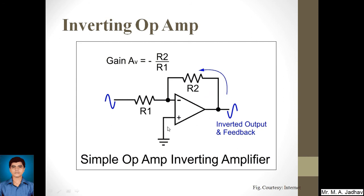Let's move to the inverting operational amplifier. In the inverting op-amp, the supply lines are not shown in the circuit symbol, but they are present. The input is taken to the inverting terminal through a resistor R1, and the non-inverting terminal is connected to ground. A feedback path is provided from the output via resistor R2 back to the inverting terminal.